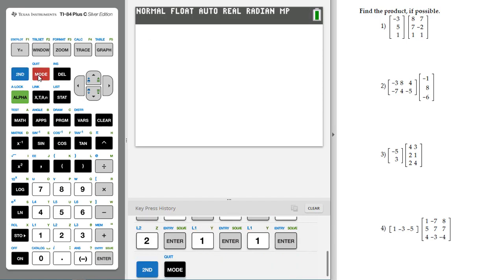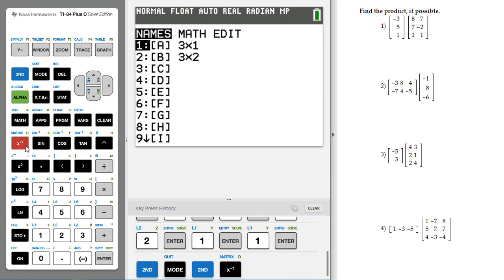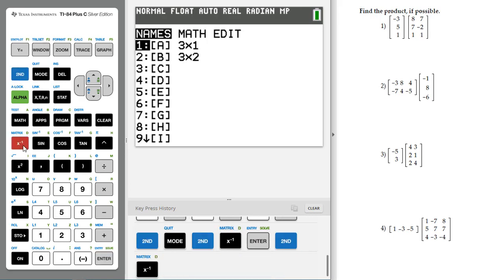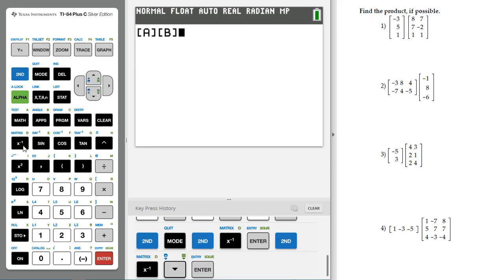And then you do 2nd Quit to exit that. Now, to multiply matrix A by matrix B, you would go to 2nd Matrix, pick matrix A, and then you multiply just by putting it next to it. So 2nd Matrix, matrix B, and then you can multiply. So let's hit Enter.